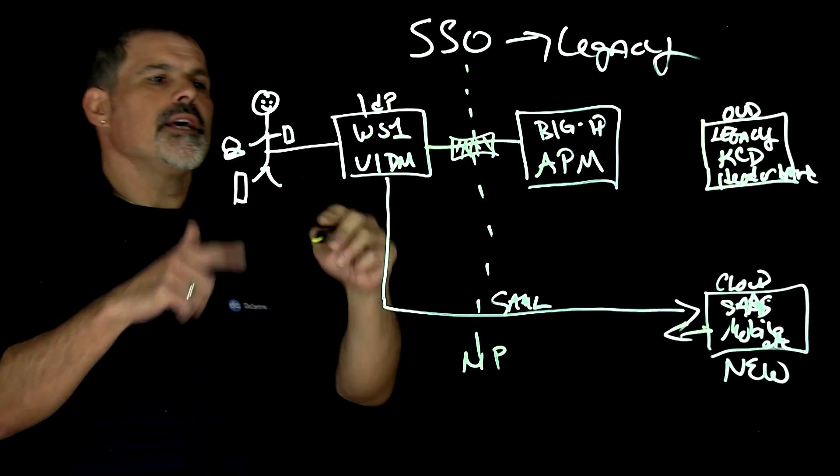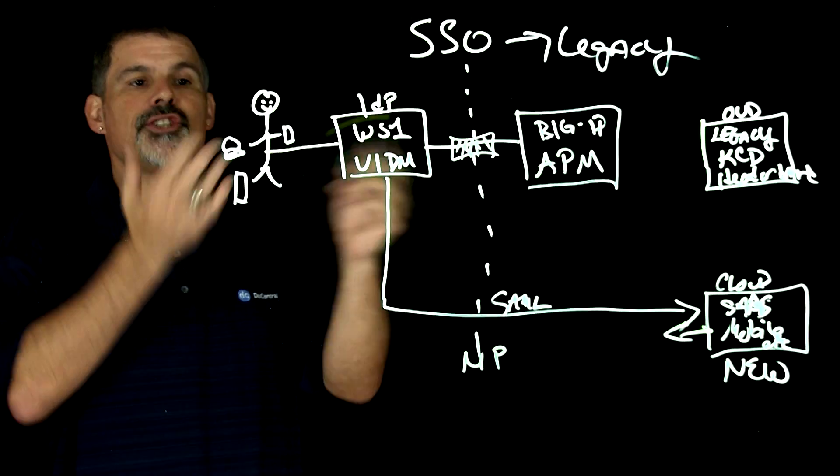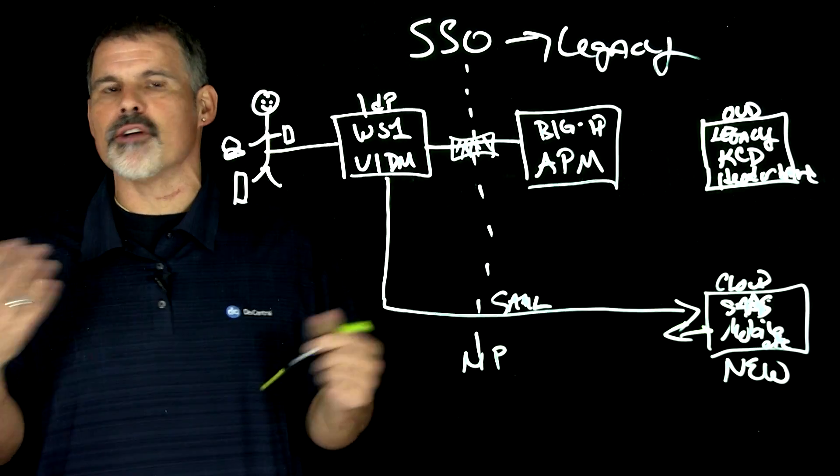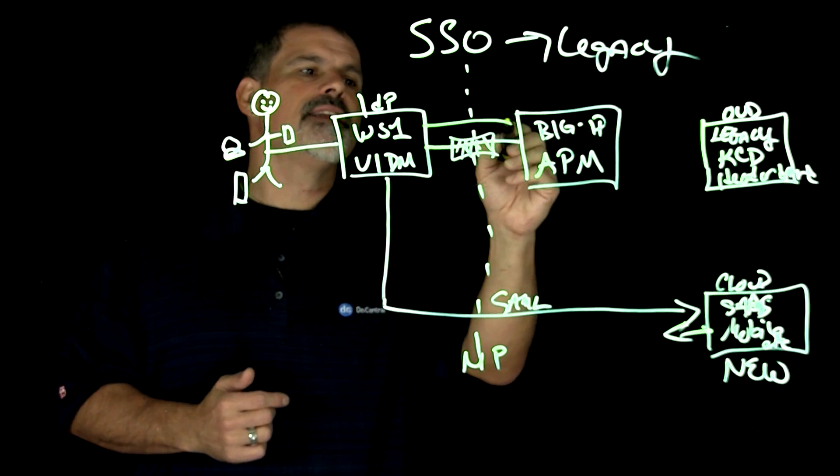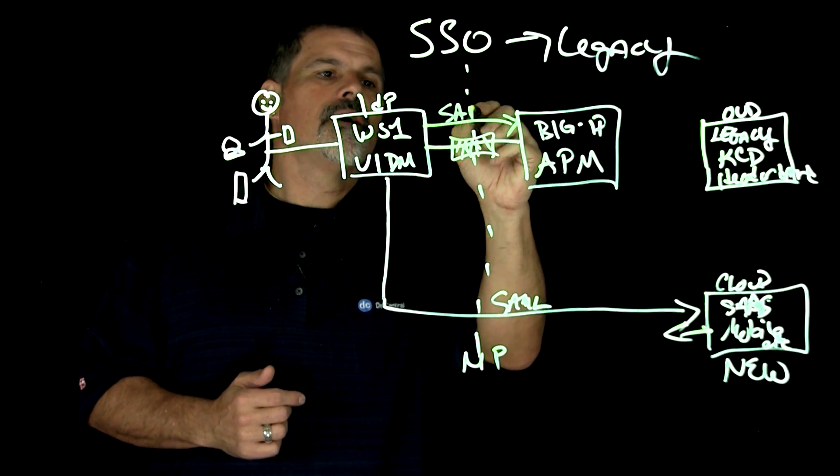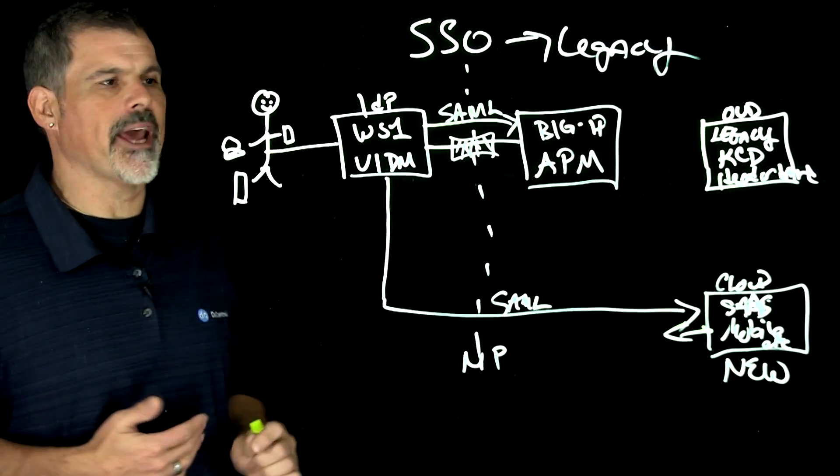And this right here is the network perimeter. And so in this instance, the identity manager will again check the user, authenticate the user, validate they are who they say they are. And then they would then send that SAML assertion over to the big IP access policy manager.